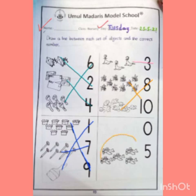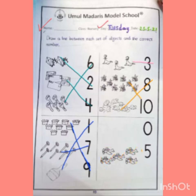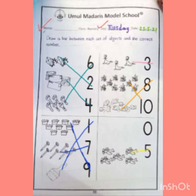यहाँ पर हैं arrow planes. How many arrow planes? Let's count: 1, 2, 3, 4, 5 — five arrow planes. तो हम 5 arrow planes को 5 number से match कर देंगे। Students, आपने color pencils के साथ matching करनी है, और जब आप matching कर लेंगे तो आपने इसकी picture बना कर G-suit पर send करनी है।